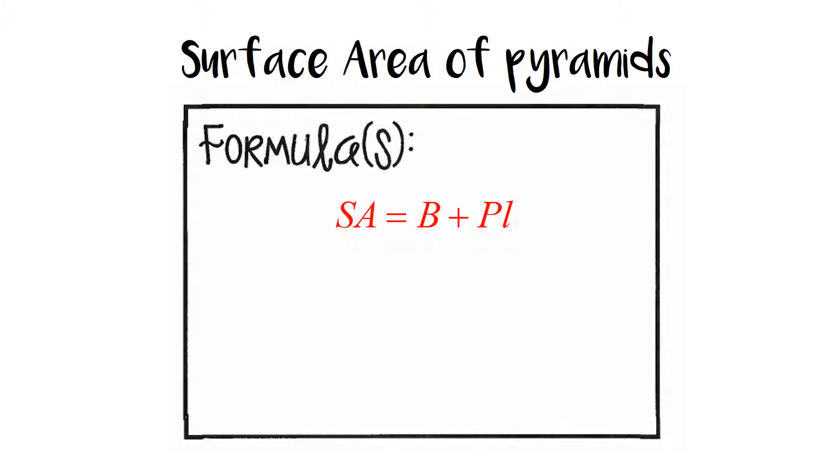The formula is surface area is equal to the base, or the area of the base, big B, plus the perimeter, that's big P, times L. So B is the area of the base of the pyramid, P is the perimeter of the base of the pyramid...